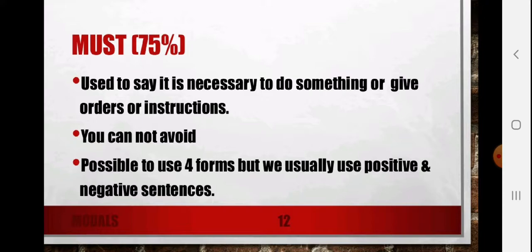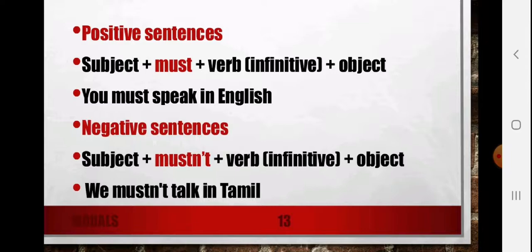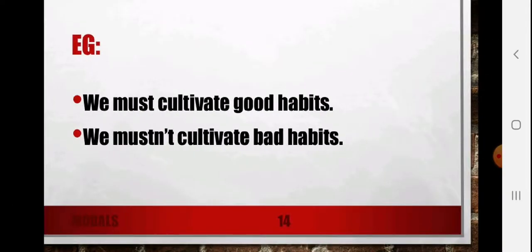It is possible to use four forms but we usually use positive as well as negative sentences. Positive sentence: subject + must + verb + object. Example: 'You must speak in English' — that is the way we give instruction during assembly or during class in school. Negative sentences: subject + must not + verb + object. Example: 'We must not talk in Tamil' or 'We must not talk in Gujarati.' We must cultivate good habits. We must not cultivate a bad habit. This is how we use 'must' and 'must not' when instructions are given or the task is important or necessary.